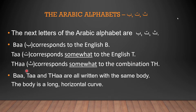Sa somewhat corresponds to the combination TH. There is no single alphabet in Arabic that corresponds to Sa, so we have to make it a combination. This combination is called TH, and TH is supposed to make the same sound as Sa.